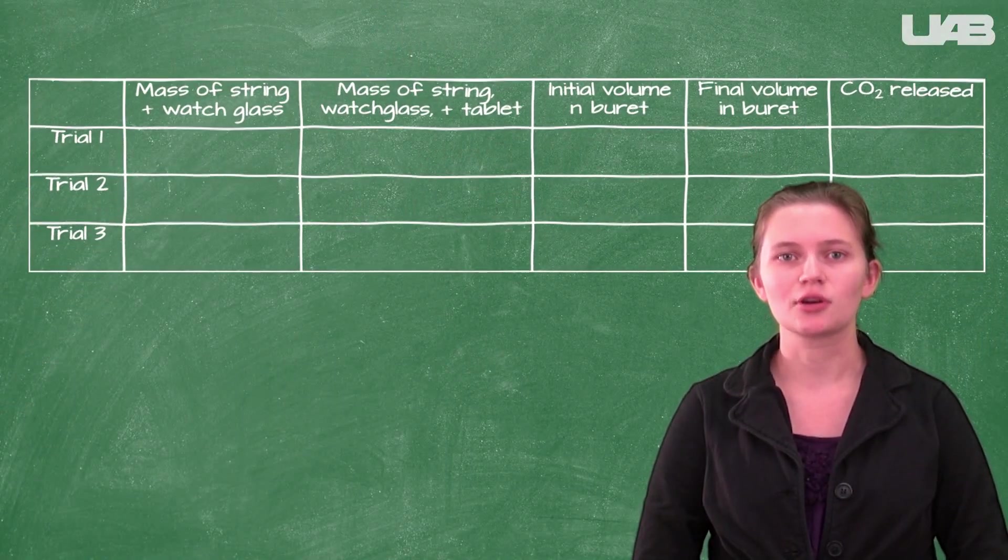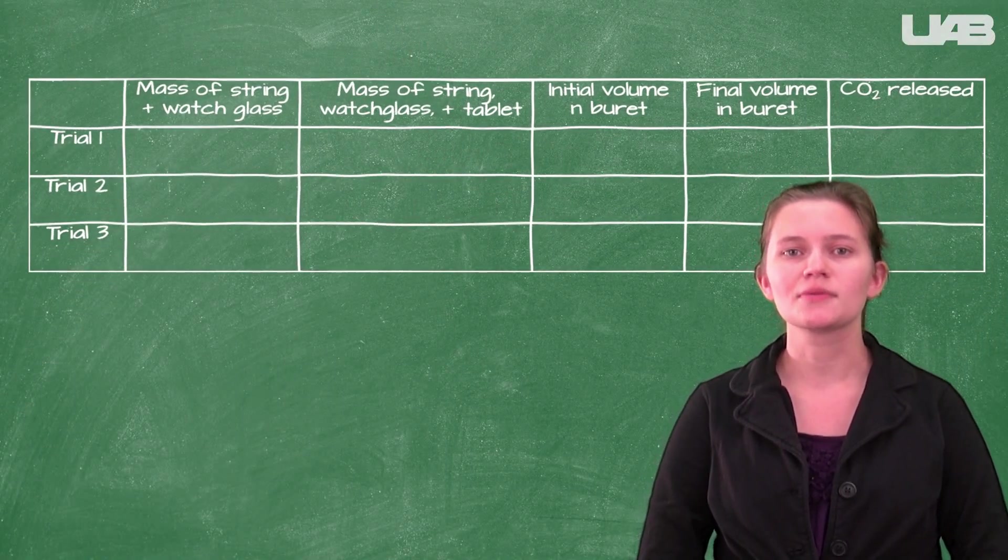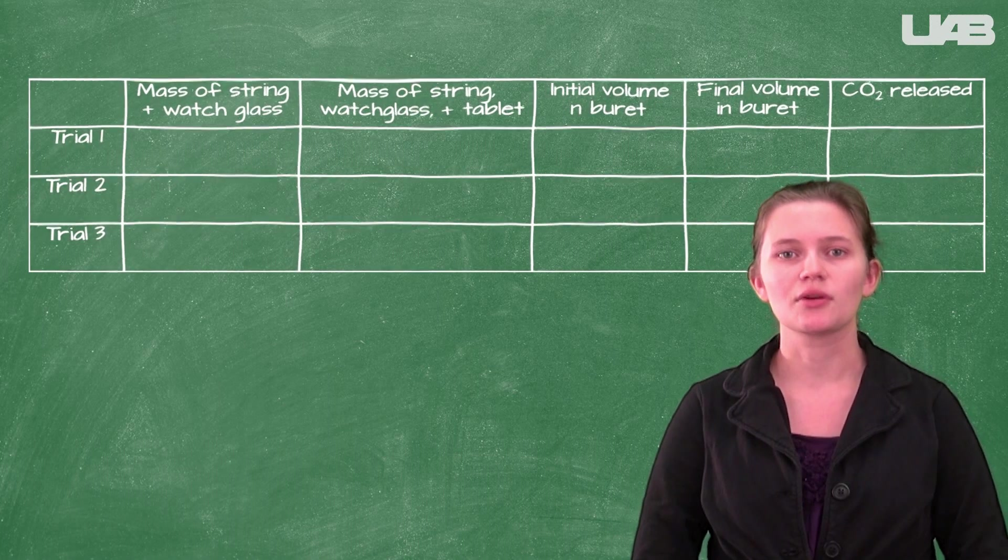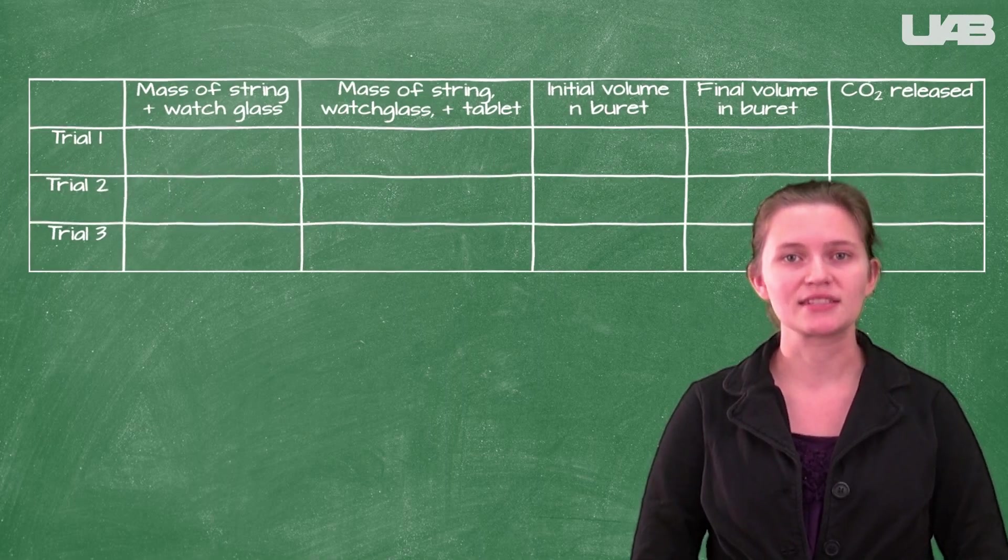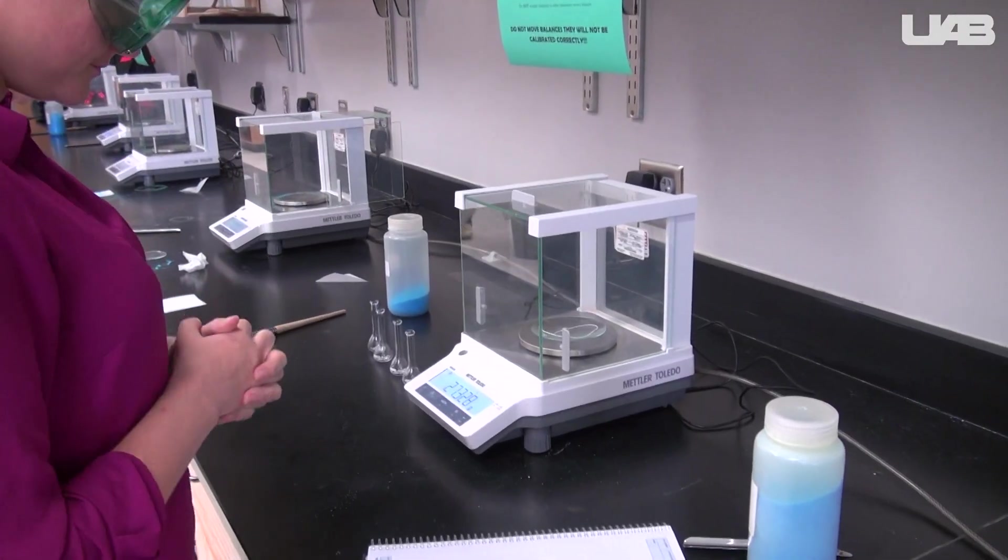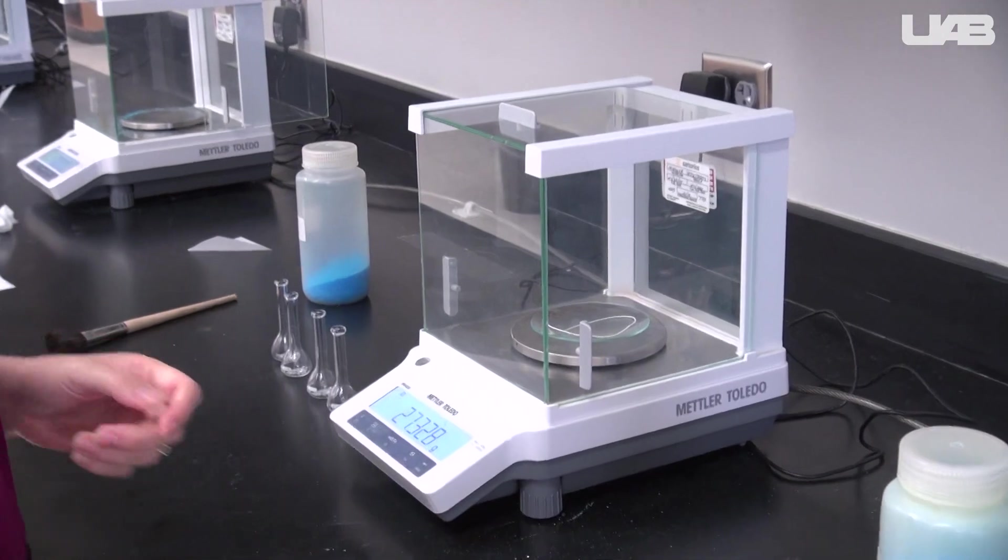Prepare your notebook to record your data. You will perform this experiment three times. You will need to record the mass of a watch glass and a string, and the mass once the tablet has been tied on. First, take the mass of the watch glass and the string and record it in your notebook.